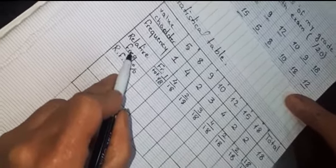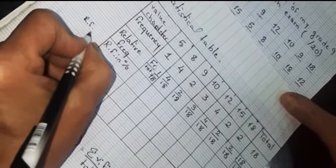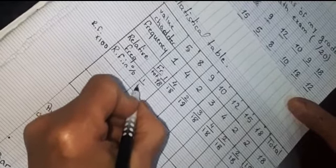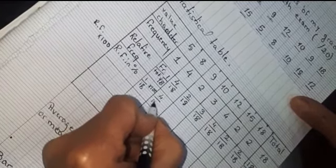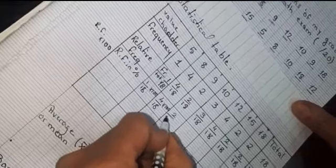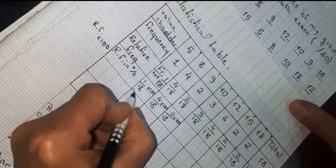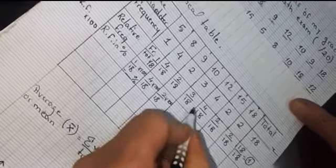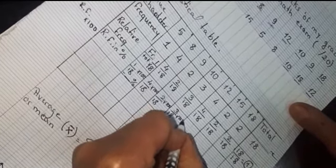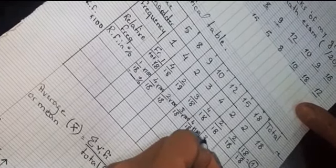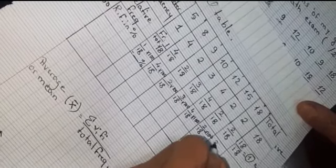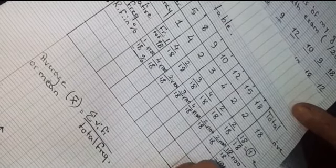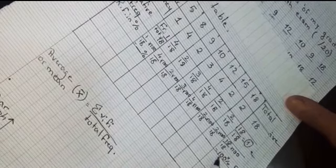After relative frequency, let's find relative frequency in percent. Relative frequency in percent equals relative frequency times 100. So for value 5: 1/18 × 100; for 8: 4/18 × 100; for 9: 2/18 × 100; and so on. The total is 18/18 × 100, which equals 100%.